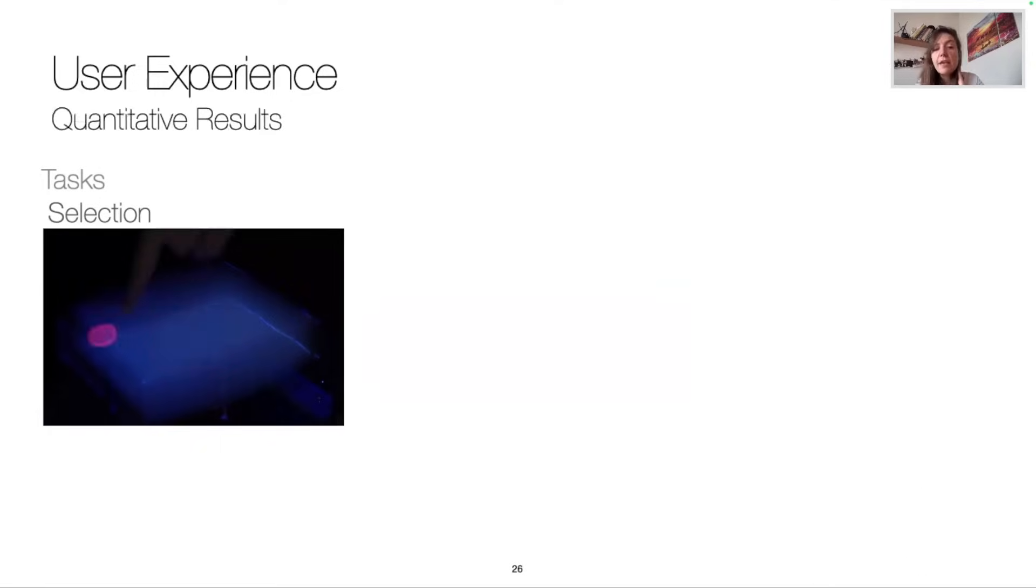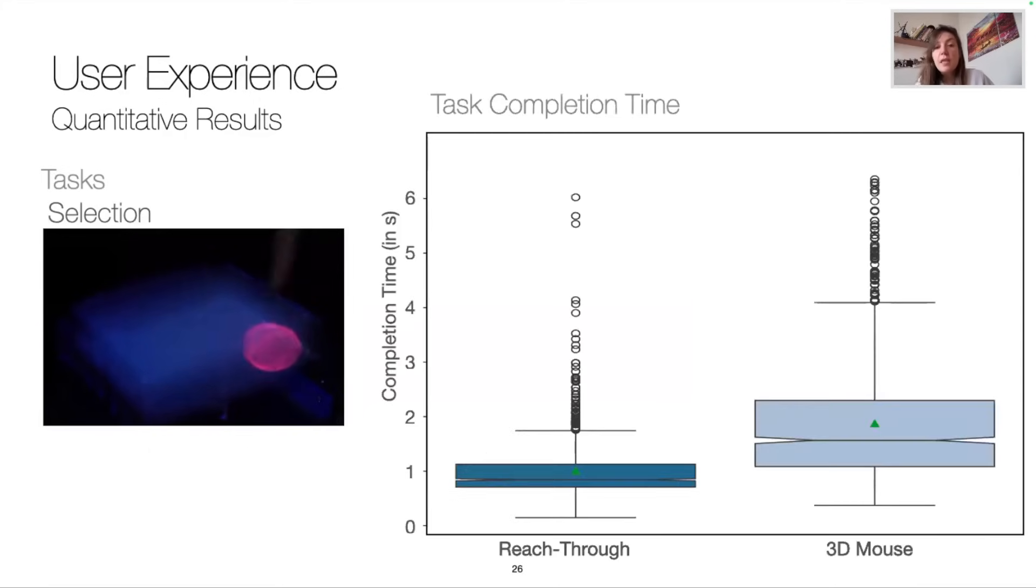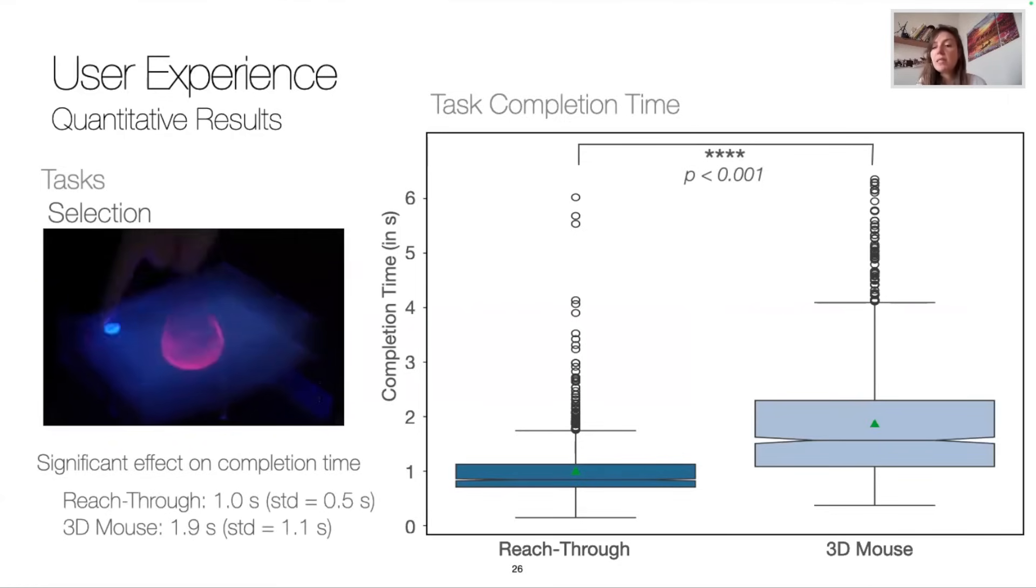First, let's take a look at the task completion time, here in seconds, for both conditions. The task completion time was significantly smaller with the reach-through input modality, and the average selection time with the reach-through modality was around one second, as noted on the boxplot with the green triangle.